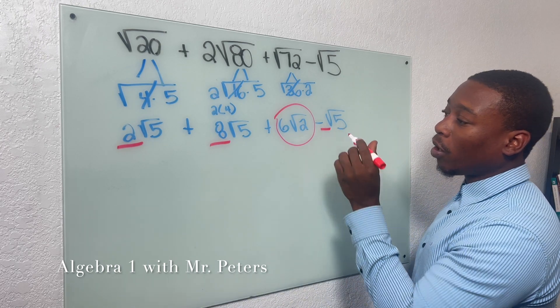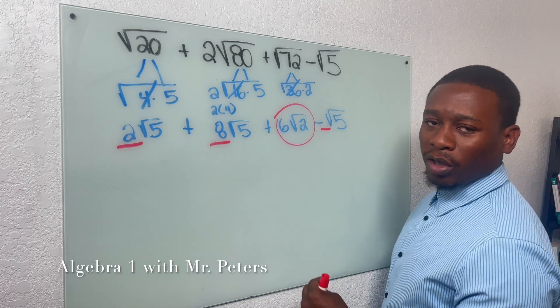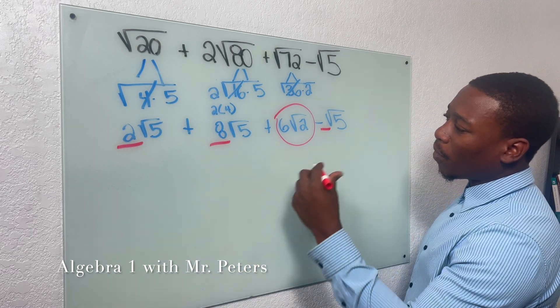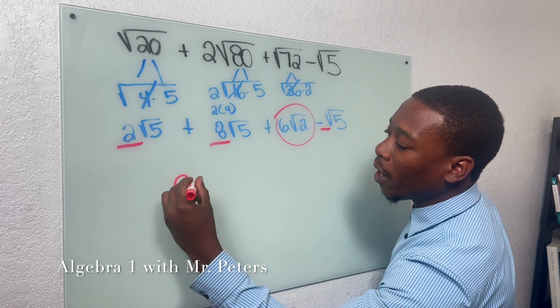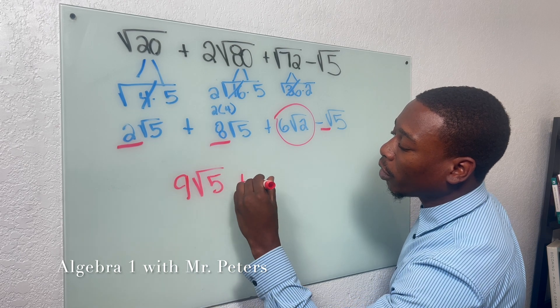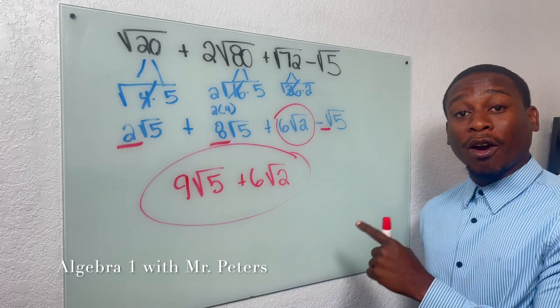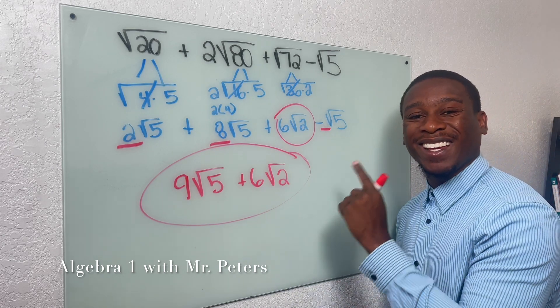So now that I'm focusing on the other radicals, all we're going to do is add the coefficients. So 2, 8, that's 10 minus 1. We're going to get 9 radical 5 plus 6 radical 2. This will be our final answer for our first example.